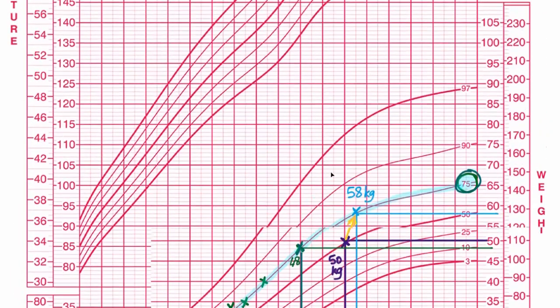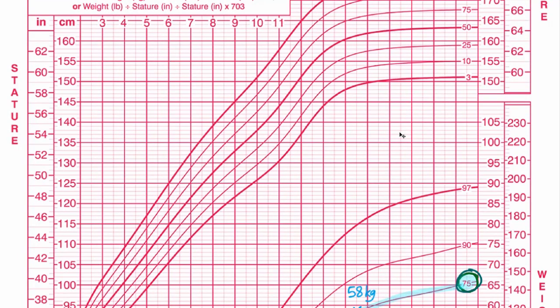Let's look at the stature graph, the height graph. Can you see how, after age 12, probably because of malnutrition, this girl didn't grow as fast as you'd expect. She fell off her height percentile.